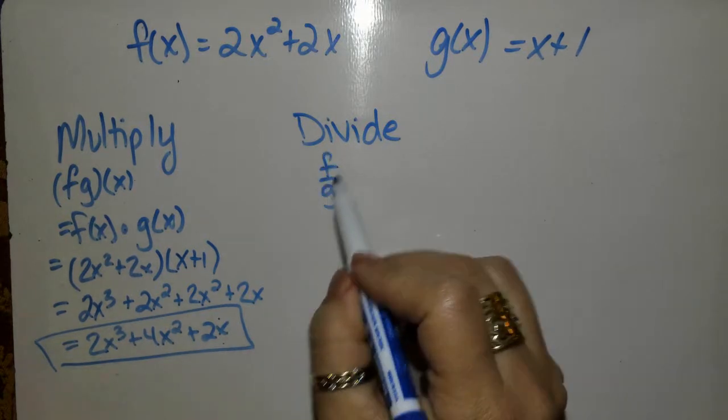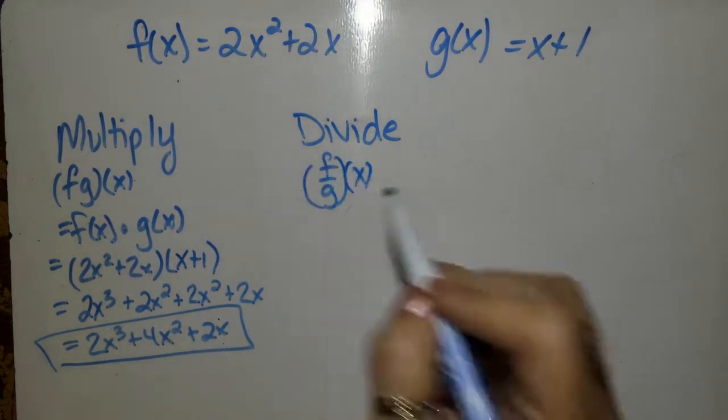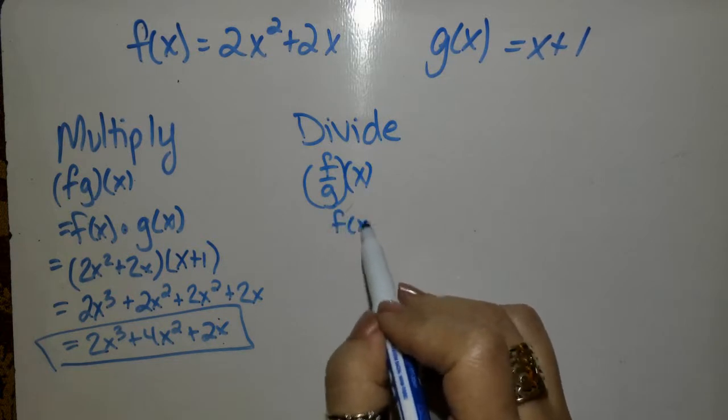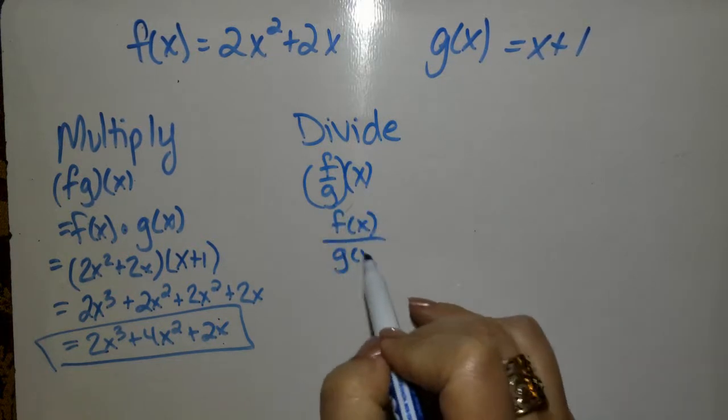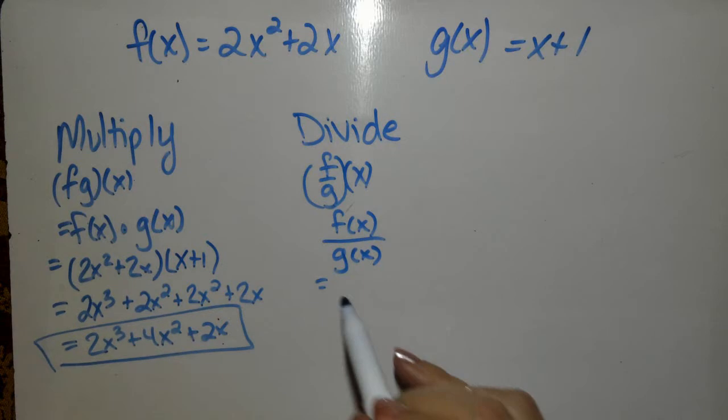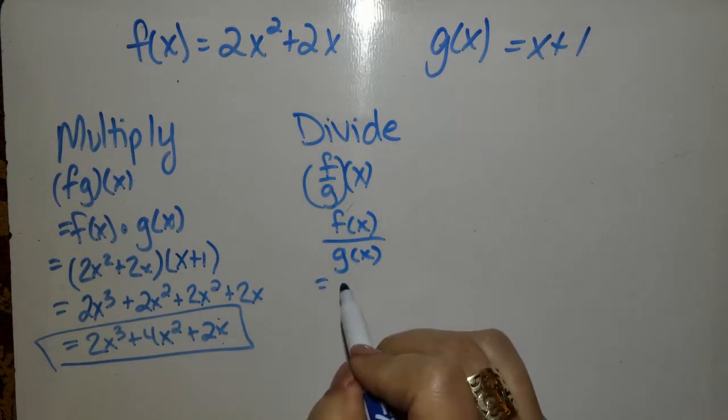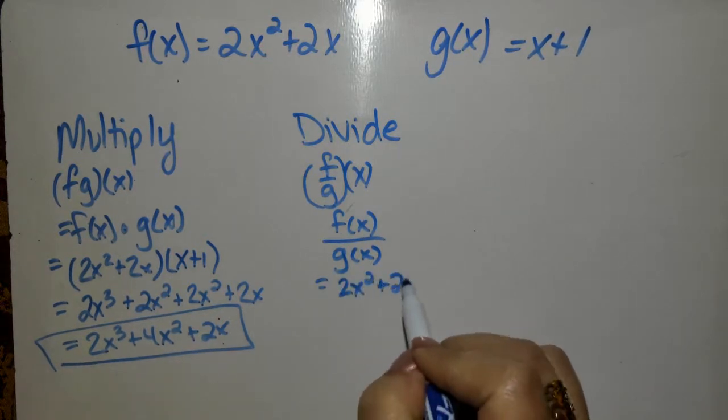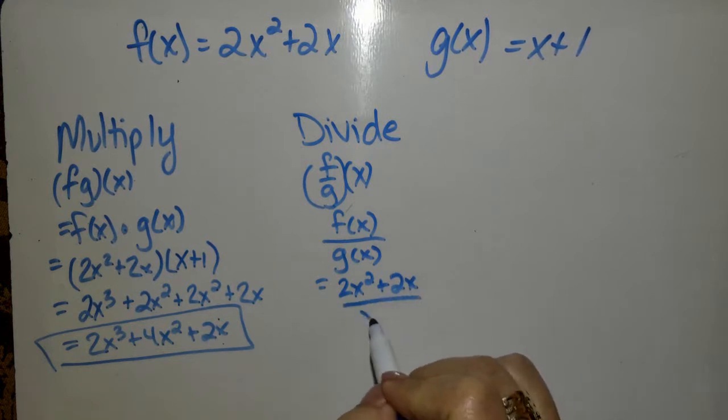you may see this, which means f of x divided by g of x. So what is that? f of x comes top, and g of x goes on the bottom.